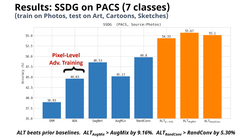Here are the results on the PAX benchmark. ALT beats all prior baselines. It is significantly better than pixel-level adversary training, and it also boosts performance of both AugMix and RandConf.